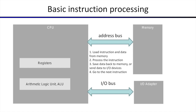So what does basic instruction processing look like? You will load the instruction and data from memory — the CPU has nothing initially. You will process the instruction, then save data back to memory or to IO devices if that's what you were doing. Then you simply go to the next instruction. This keeps on repeating itself.